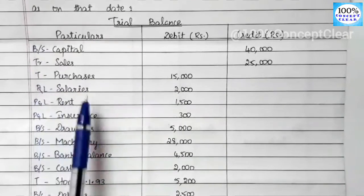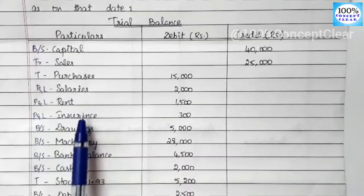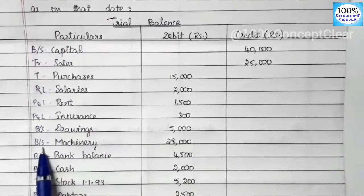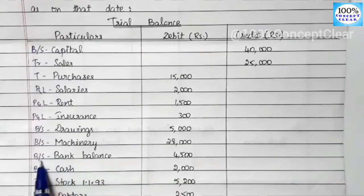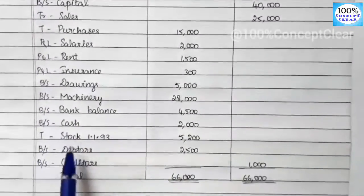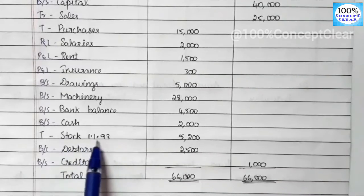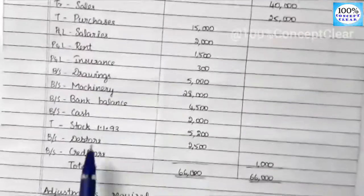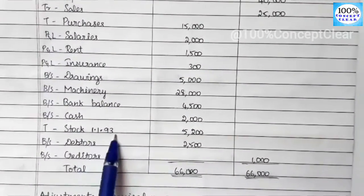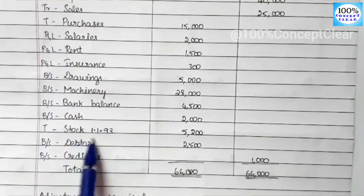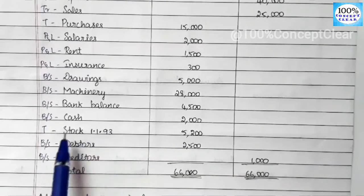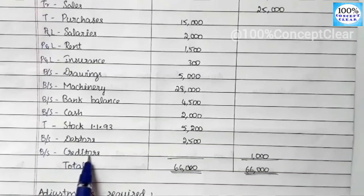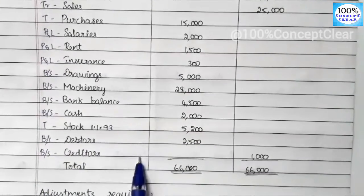Salaries — P&L account. Rent — P&L account. Insurance — P&L account. Drawings — Balance Sheet. Machinery — Balance Sheet. Bank balance — Balance Sheet. Cash — Balance Sheet. Stock dated 1/1/93 is the opening stock — Trading account. These are the trial balance items.